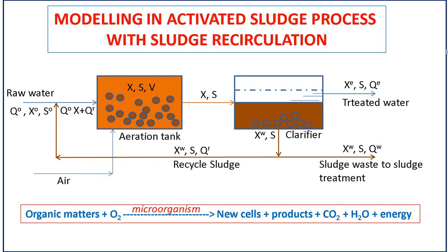The liquid mixture from the aeration tank then flows into a sedimentation tank to separate the clear liquid with substrate concentration S, and microbial sludge with concentration XE — called activated sludge. The sediment from the bottom contains high microbe concentration XW, recirculated back into the aeration tank. A portion with volumetric rate QW and sludge concentration XW is discharged to sludge treatment to prevent accumulation and adjust microbial cell residence time.